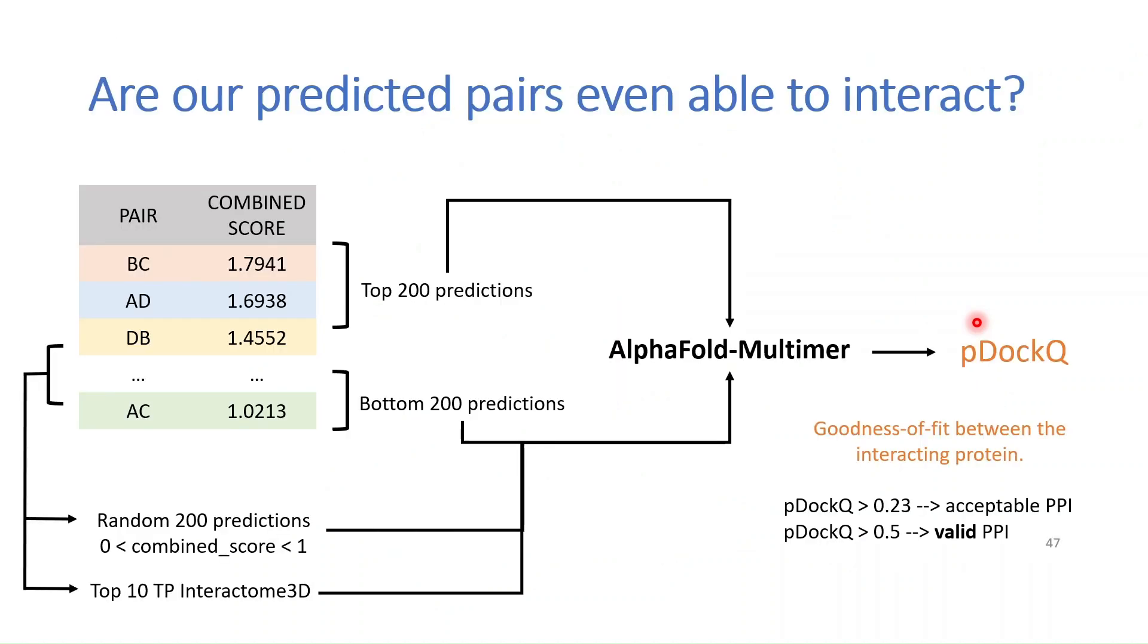And finally because we wanted to give this a little bit of a structural scope we took different subsets of interactions from this ranked list that I just showed you and used AlphaFold Multimer to assess whether these structures are suitable for interaction or not. And we do this by calculating the pDockQ score that tells us whether these two structures are a valid protein-protein interaction or not.